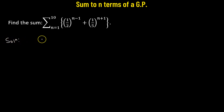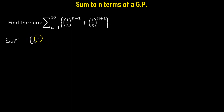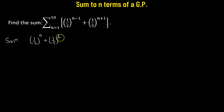So for the first term, all we have to do is substitute the value of n equals to 1. So we get the first term is one-half raised to the power of 1 minus 1, so that's 0, plus 1 over 5 raised to the power of 1 plus 1, which will be 2. So this is going to be our first term.